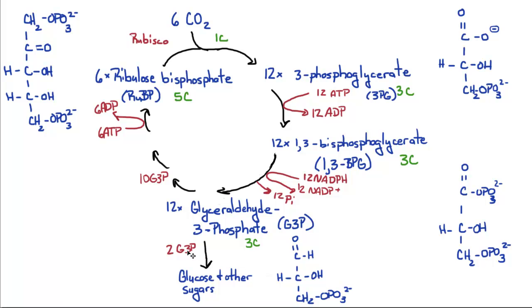Two of these glyceraldehyde-3-phosphates are used to produce glucose and other sugars. The other ten are used to produce ribulose-bisphosphate to continue the cycle.